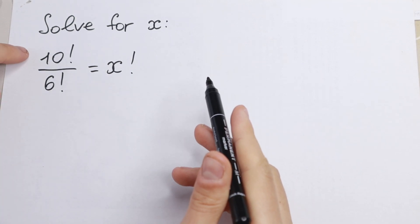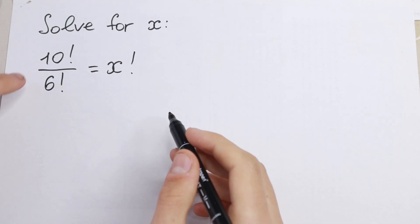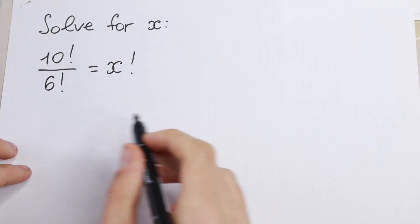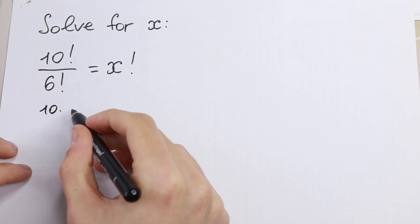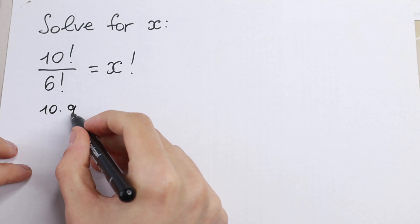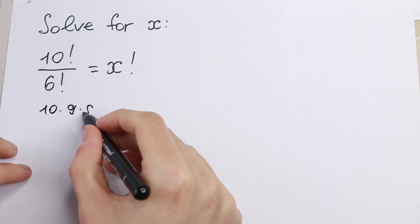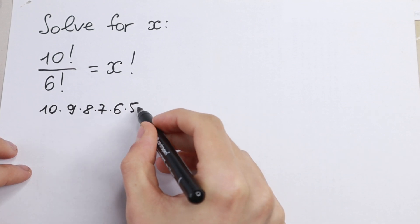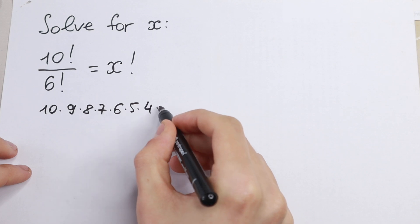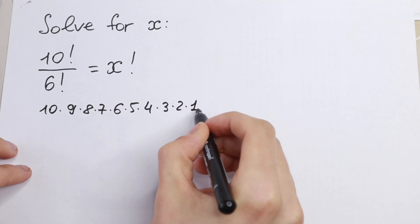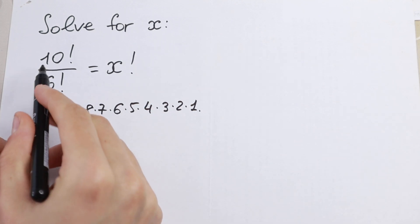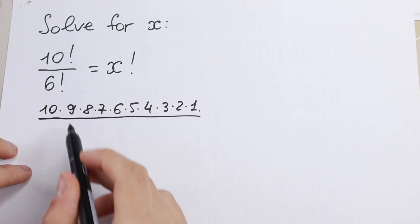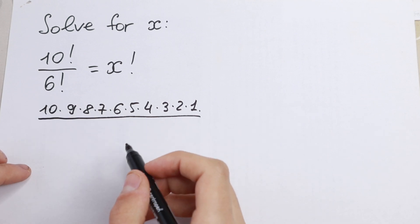Let's simplify our left side. As you can see we have 10 factorial in the numerator. We all know that 10 factorial is a product from 10 times 9 times 8 times 7 times 6 times 5 times 4 times 3 times 2 and 1. And we divide this by 6 factorial in the denominator.